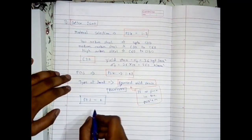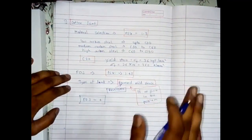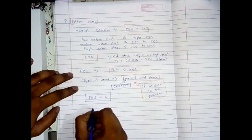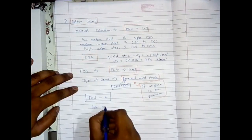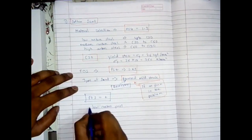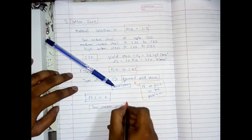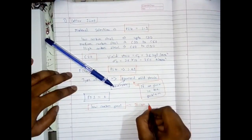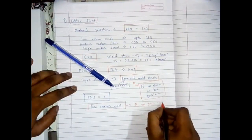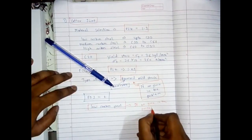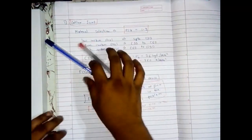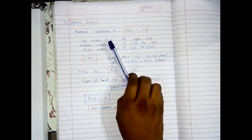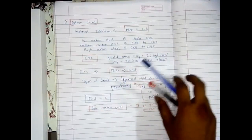For cotter joint, if the problem does not mention which material to use, then we use low carbon steel as the default. This completes how to use PSG for cotter joint. Now we will go to knuckle joint.